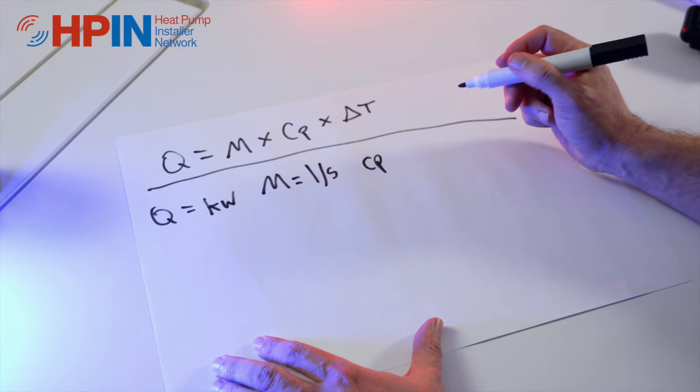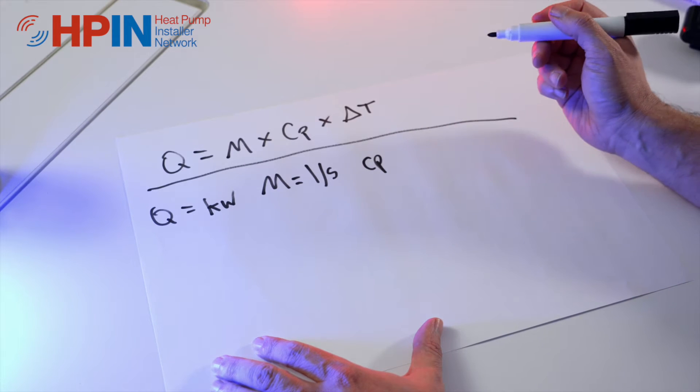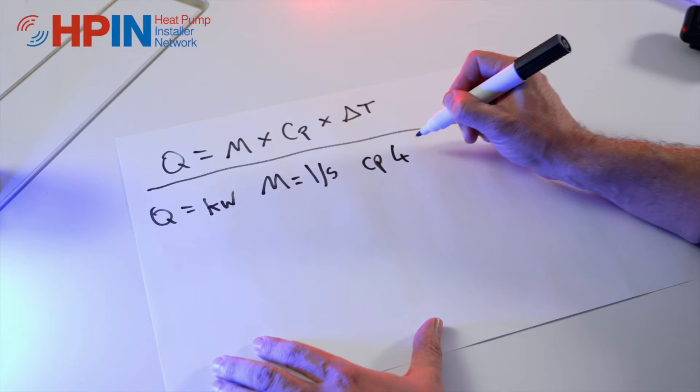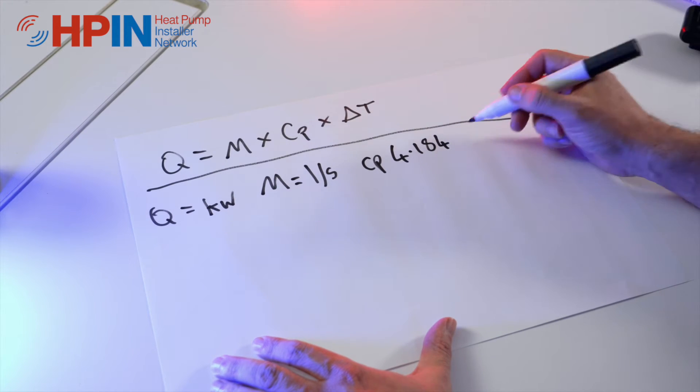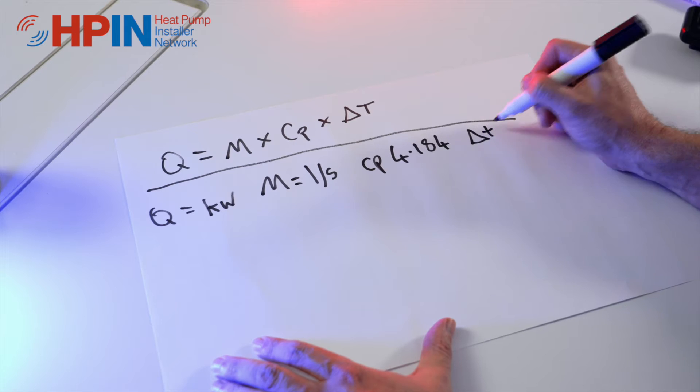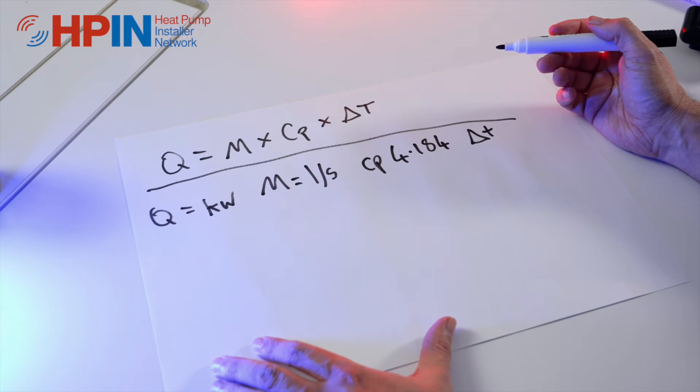Cp is our specific heat capacity of water and it's always the same, it's 4.184. And then our delta T is our delta T, so we know about that if we know about heating systems.